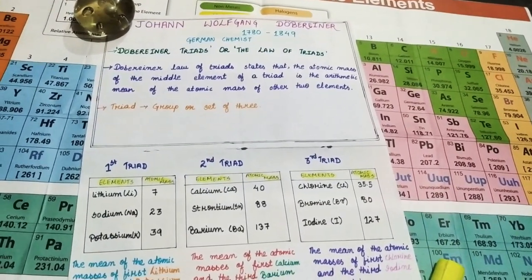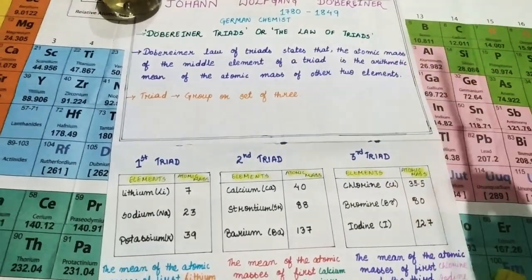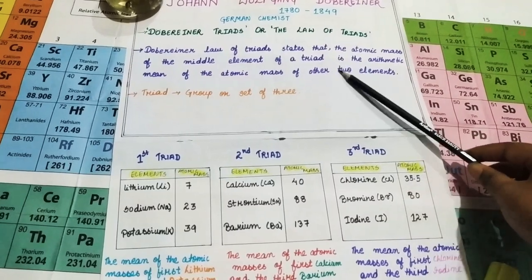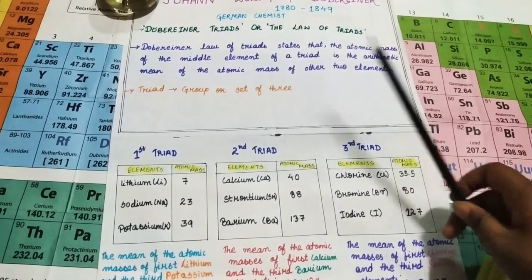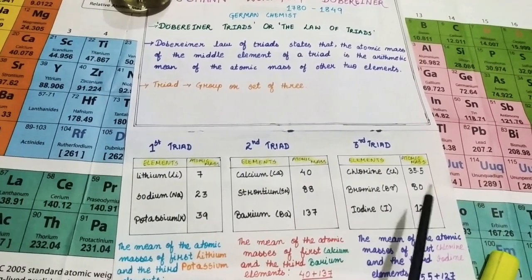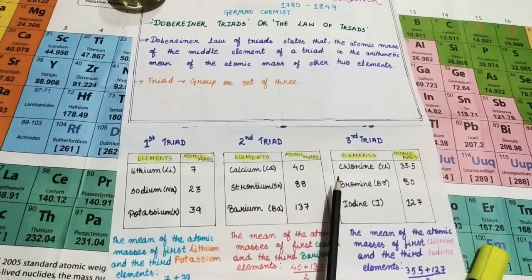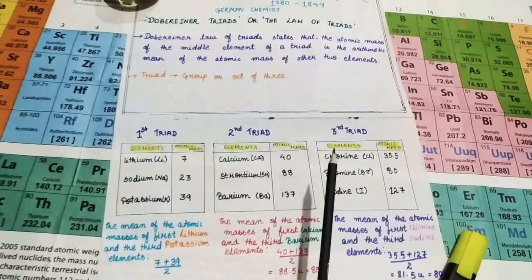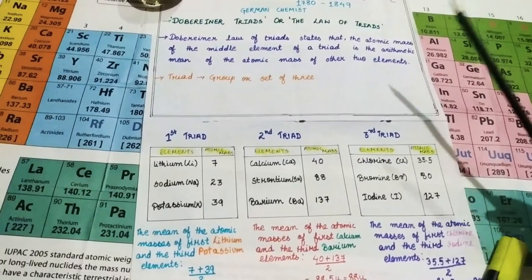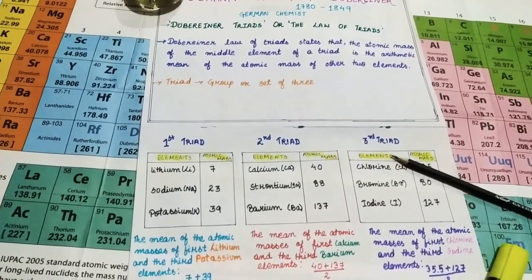Let me once again review it. See, his statement stated that atomic mass of the middle element of a triad is the arithmetic mean of the atomic mass of the other two elements. See, when we added this, this is the first and the third elements. When we added this number and divided by 2, we got the middle element's mass number. Right? You have seen it. I have just shown you. So, his statement is valid in these three triads. I hope you understood his statement and how we related it with these three triads. I hope I was clear enough.